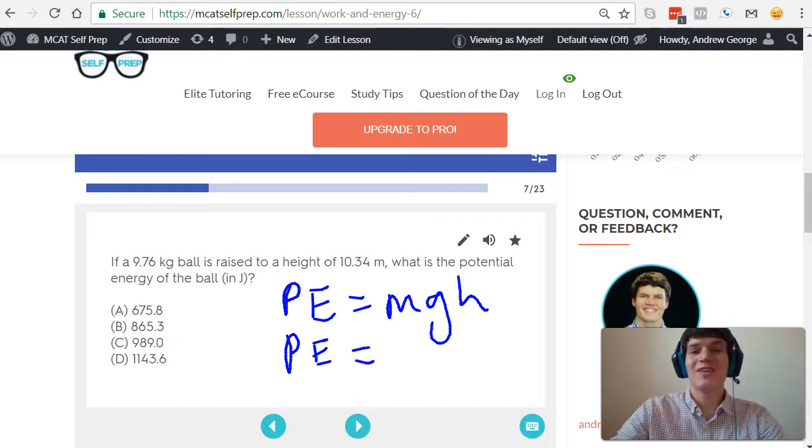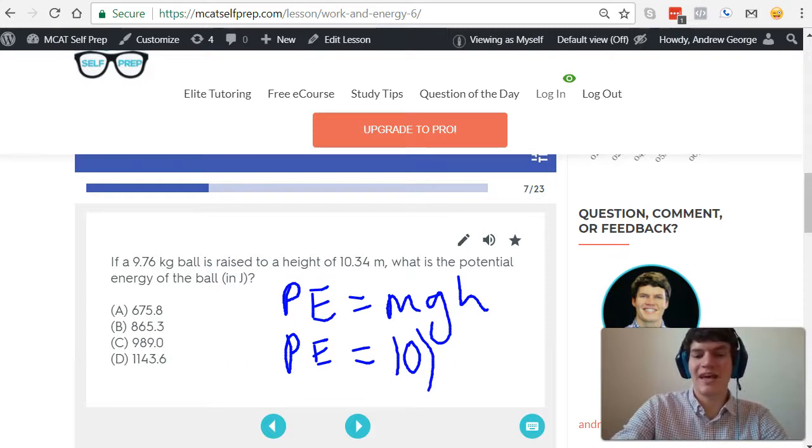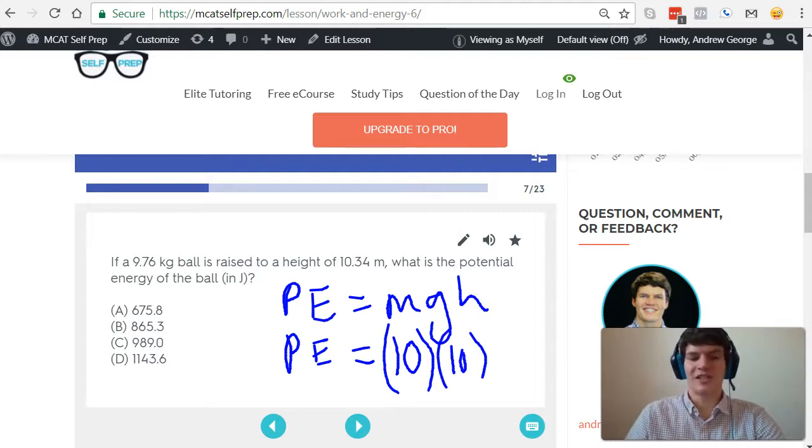So potential energy is equal to mass, which in this case is close to 10 kilograms, and gravity, which is 9.8 meters per second squared—I'm going to approximate that as 10 as well—and height, which is close to 10 meters.